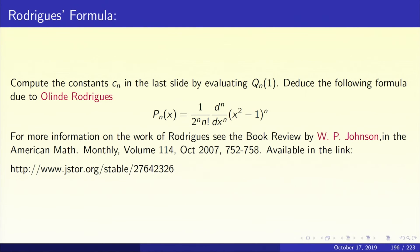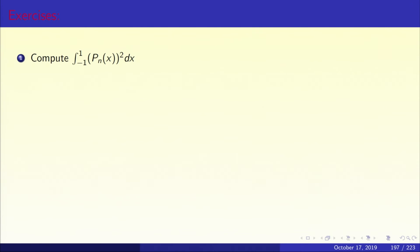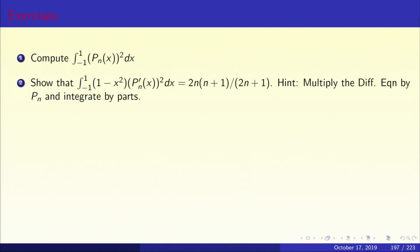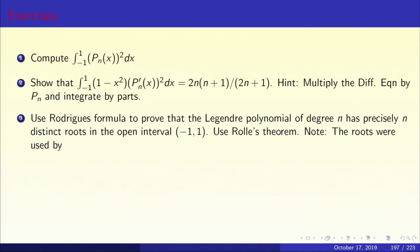Now let us see how to use this Rodrigues formula. One way would be to look at the integral from minus 1 to 1 of pn(x) squared dx — you can use Rodrigues formula to compute it. You can also use it to calculate the integral from minus 1 to 1 of (1 minus x squared) times pn prime(x) squared, or you can directly use the differential equation. One more exercise: use Rodrigues formula to prove that the Legendre polynomial of degree n has precisely n distinct roots in the interval minus 1, 1. This is a beautiful application of Rolle's theorem.